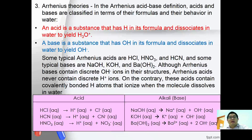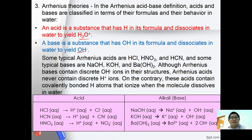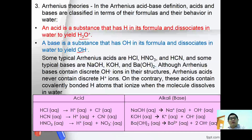In the Arrhenius acid-base definitions, an acid is a substance that has H in its formula and dissociates in water to yield hydroxonium ion H3O+, whereas a base is a substance that contains OH in its formula and dissociates in water to yield OH-. Some typical Arrhenius acids are HCl, HNO3, HCN, whereas some typical bases are NaOH, KOH. Although Arrhenius bases constantly contain discrete OH- ions in their structure, Arrhenius acids never contain discrete H+. Instead, these acids contain covalently bonded H atoms that are ionized when the molecules are dissolved in water.